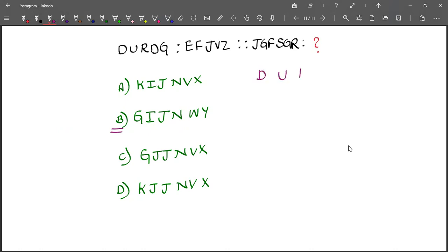D, U, R, D, G, N, E, F, J, V, Z. Okay. So D is 4 and E is 5, U is 21, F is 6, R is 18, J is 10, D is 4, V is 22, G is 7, and Z is 26.